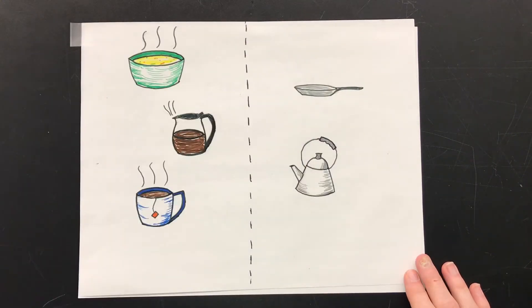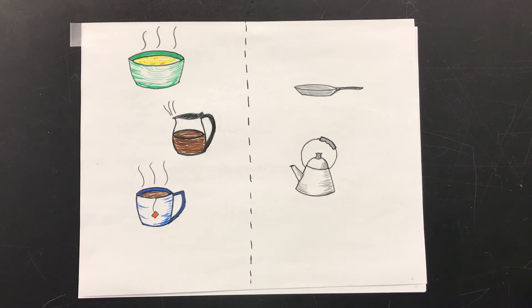And the higher the water content of a substance, the closer its heat capacity will be to that of water. That's why things like soup, coffee, or a cup of tea take longer to heat up and cool down compared to metal objects like the pans and kettles you use to heat them.